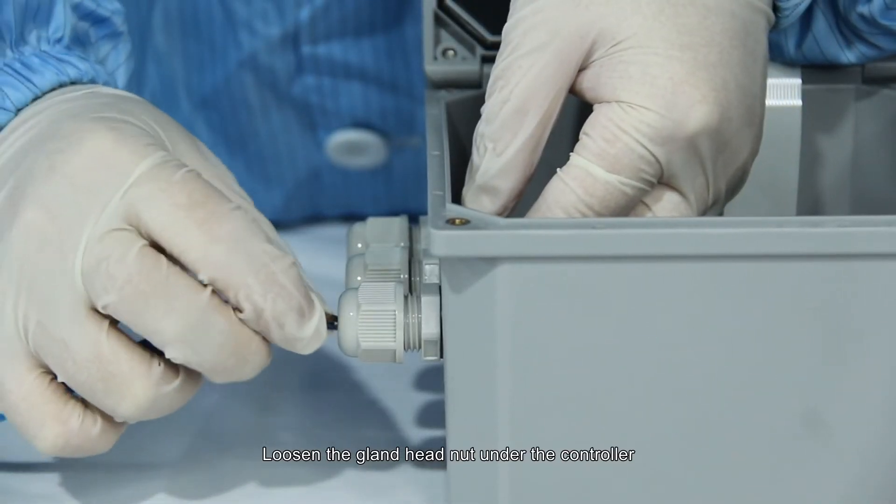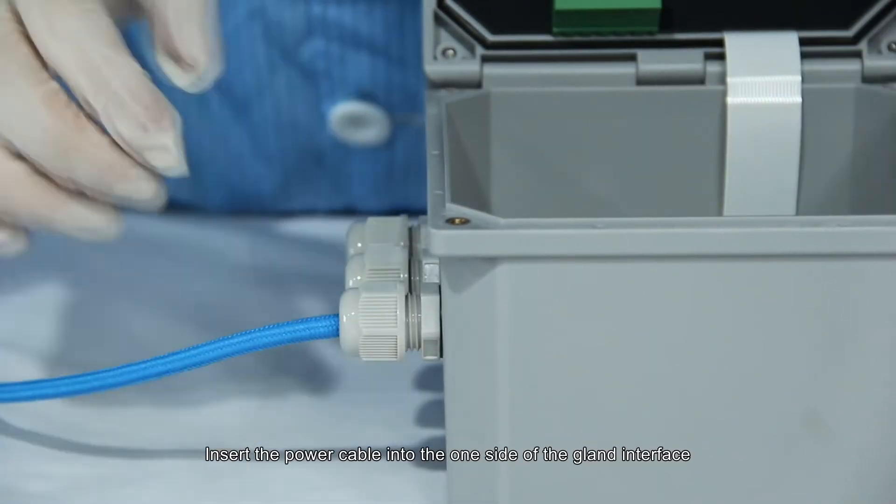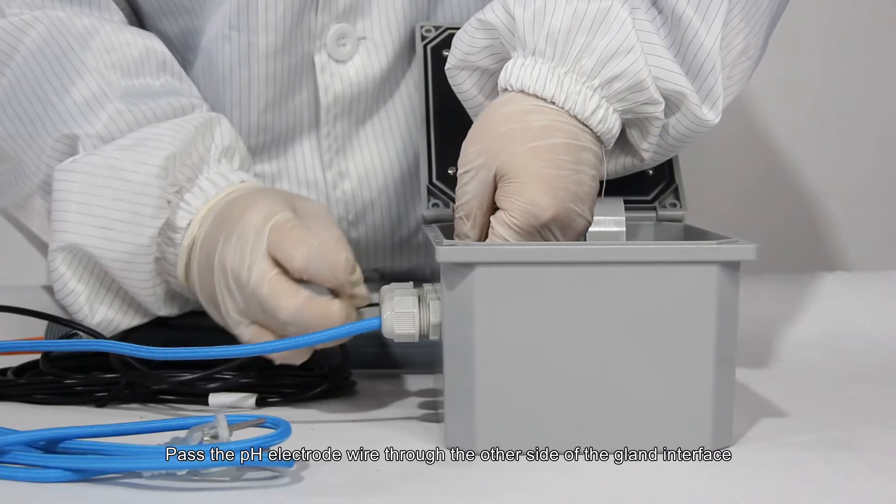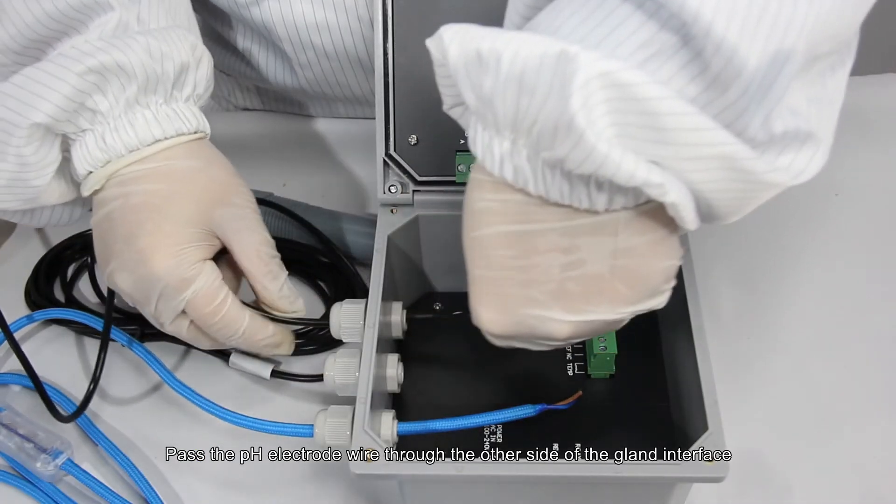Loosen the gland head nut under the controller. Insert the power cable into one side of the gland interface. Pass the pH electrode wire through the other side of the gland interface.